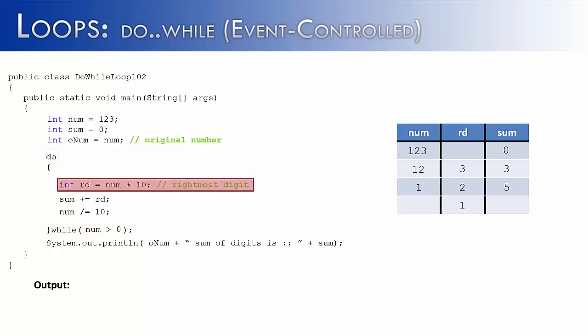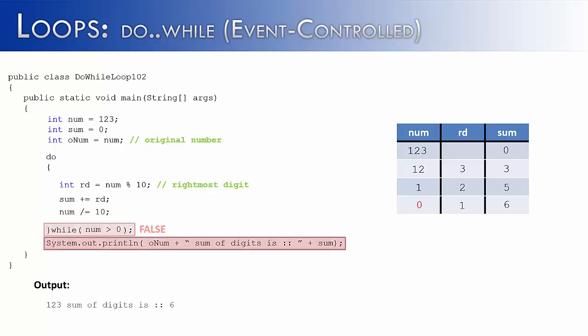Again, we're going to isolate the rightmost digit. Well, the rightmost digit is the only digit, and that is 1. And so we're going to take that digit, add it to sum, and so we get a sum of 6. And then we're going to divide the number by 10. And when we take 1 and divide it by 10, it's going to give us 0. There are no more digits left to add together. Therefore, we know the loop is finished, our event has been reached, and our condition is false. Num is not greater than 0, because it is 0. So therefore, we would print out our output.